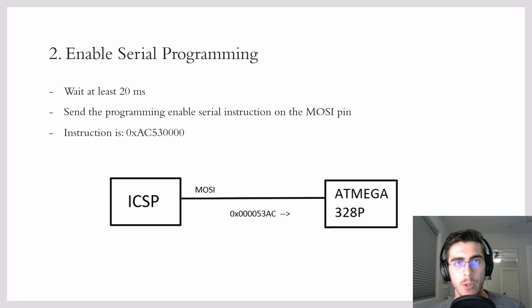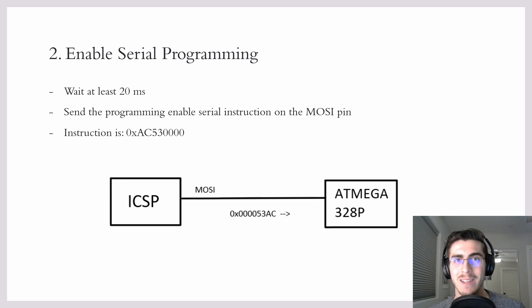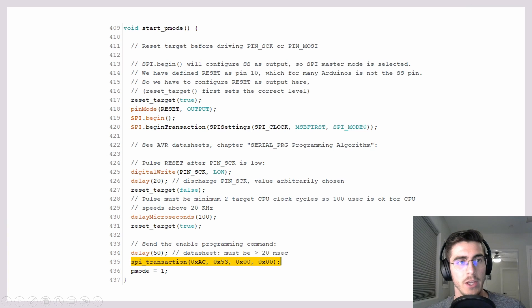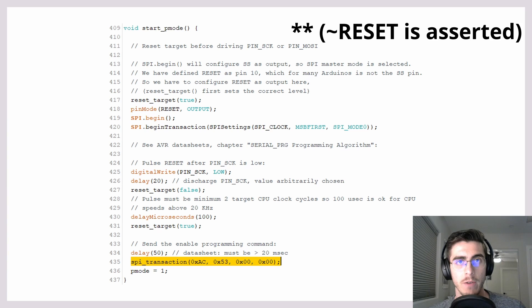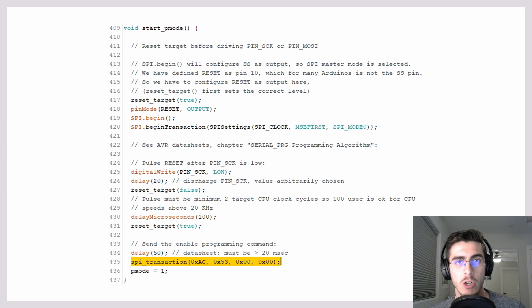Next, we must enable serial programming by sending the enable serial programming instruction on the MOSI pin. The instruction is 0xAC530000. Note the order in which the bytes are sent: AC followed by 53, followed by the zeros. Here is a screenshot of the part of the Arduino ISP sketch which implements step 2. Note the reset target command, which is asserted for 100 microseconds, then de-asserted before sending the instruction mentioned before.